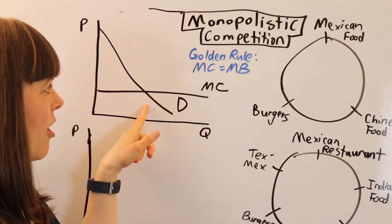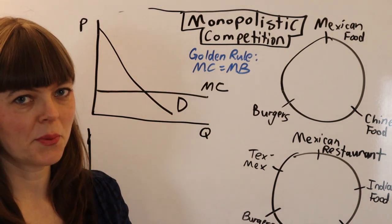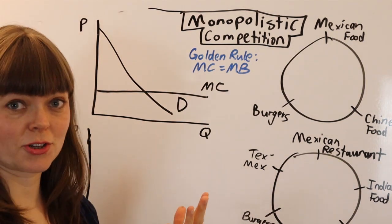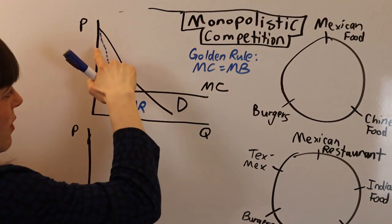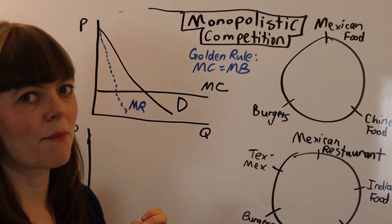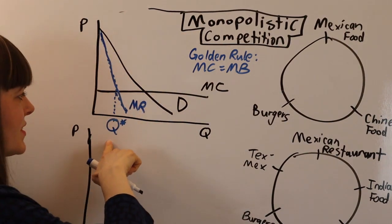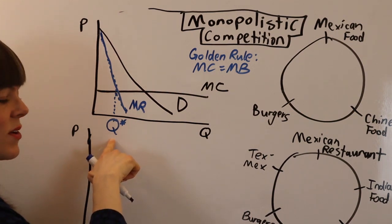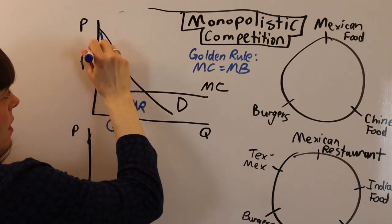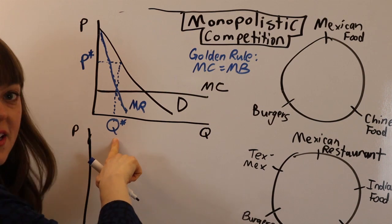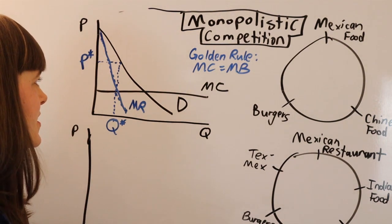We need to find our marginal benefit — in this profit-maximization situation, the benefit is revenue. So let's find the marginal revenue curve. Wherever marginal revenue equals marginal cost, that gives us our optimal quantity. Once we've found our optimal quantity, we set the price as high as we possibly can at that quantity, up on the demand curve. So we've found our optimal quantity and optimal price for this monopolist Mexican restaurant.